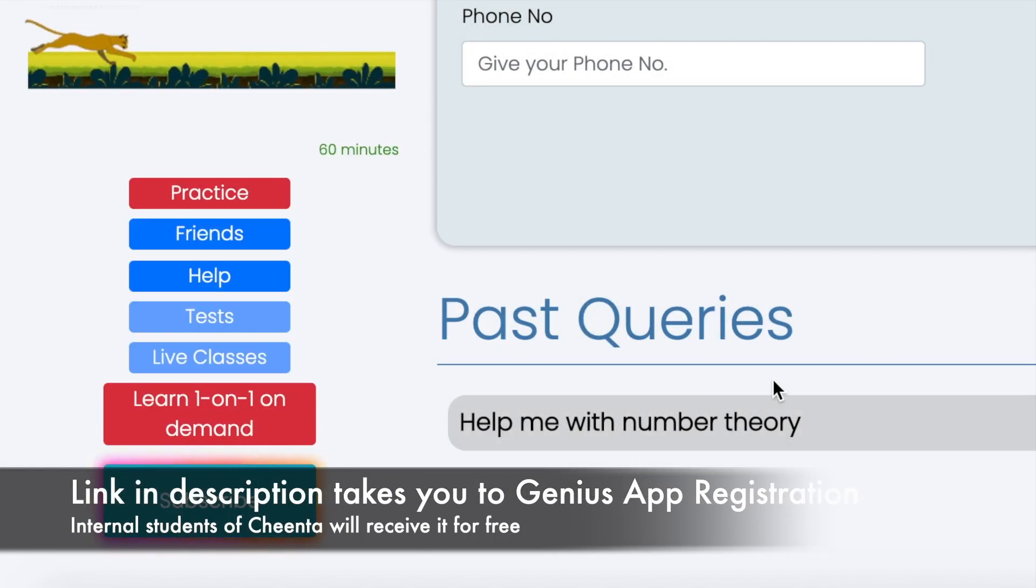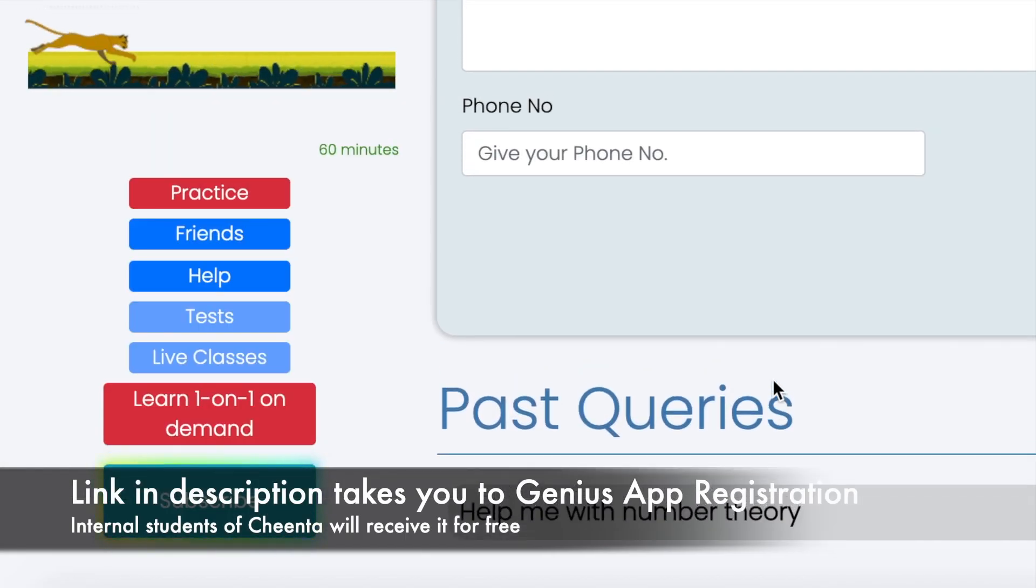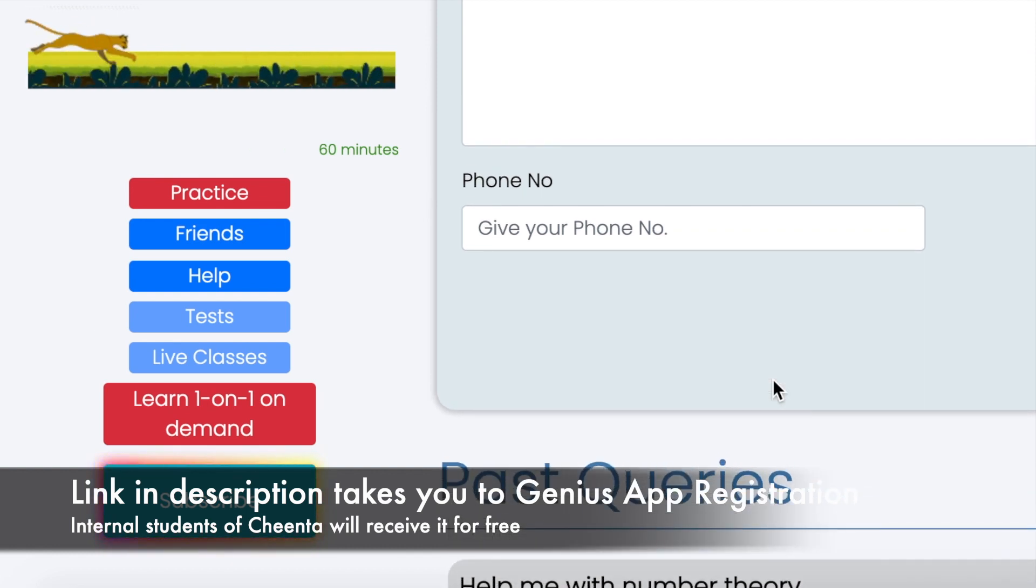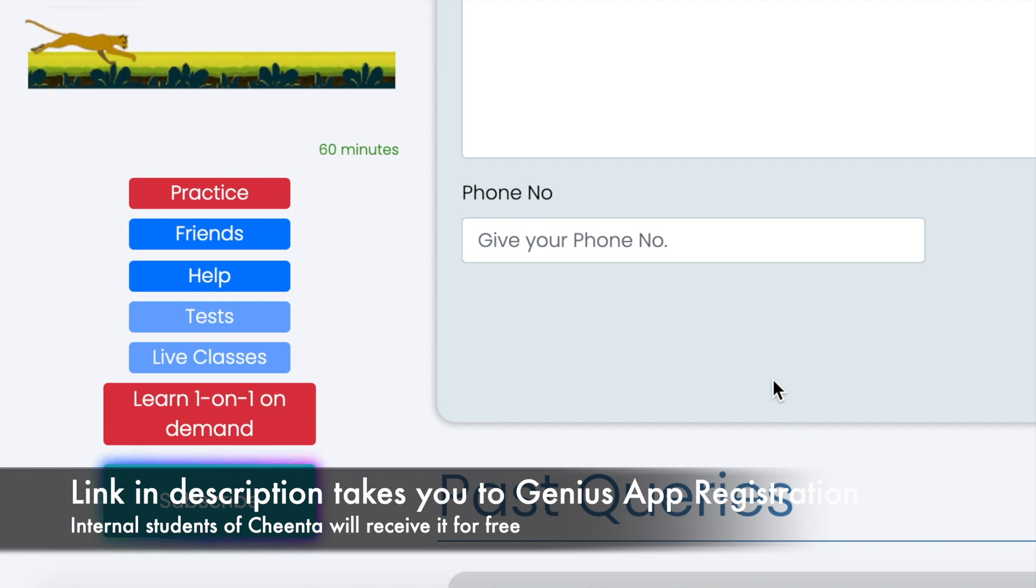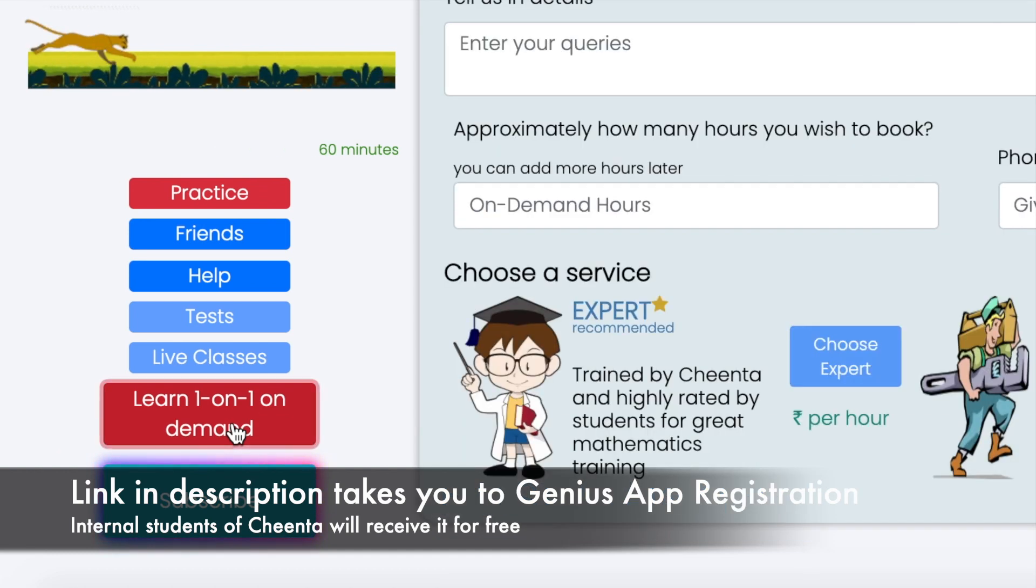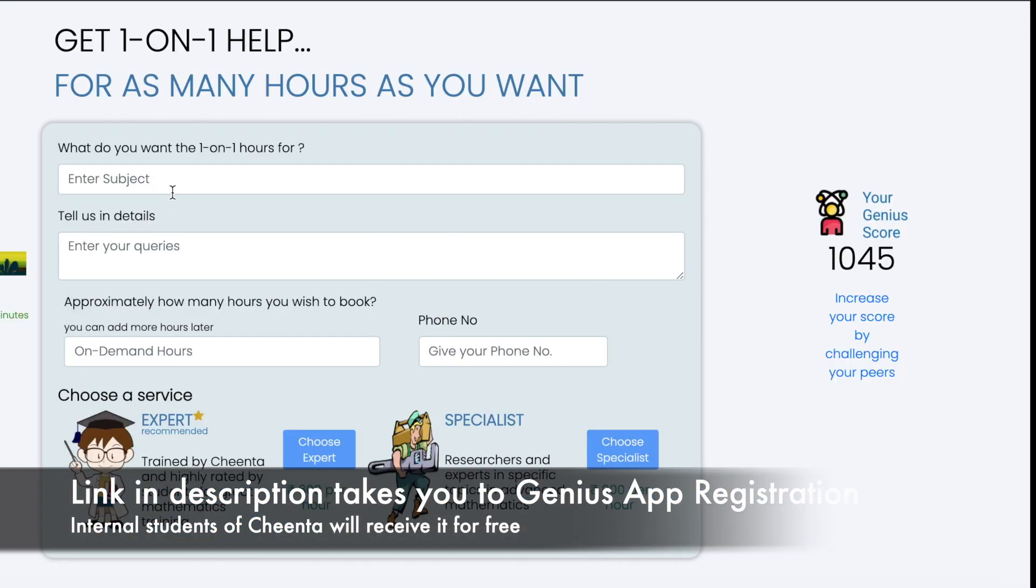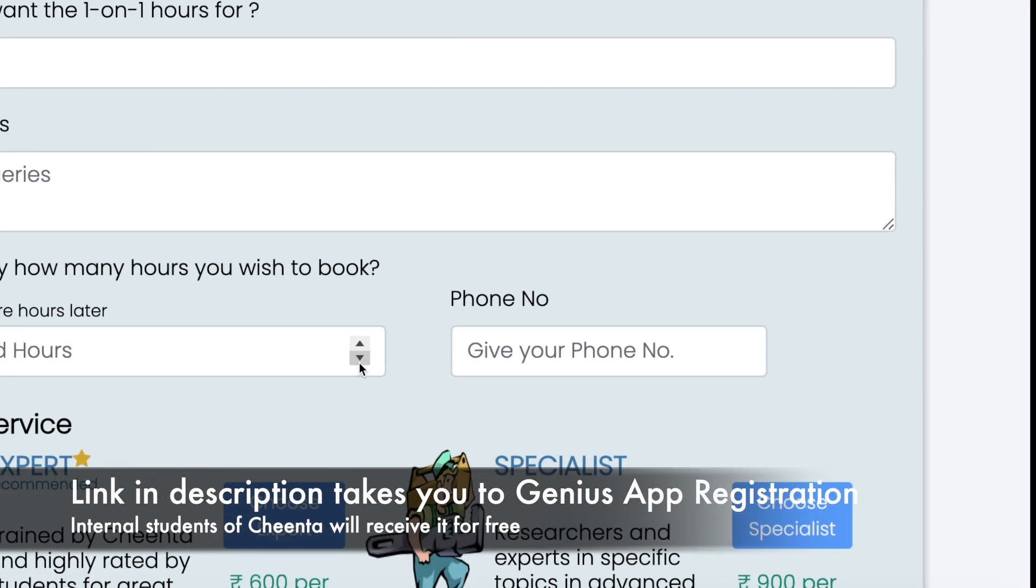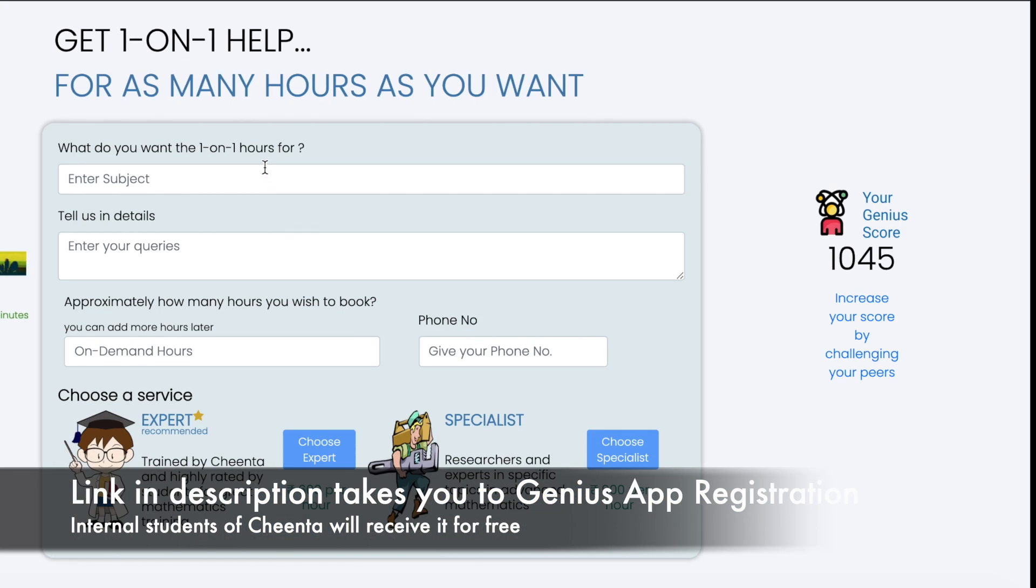Maybe you need help in a one-on-one manner, more help than you already have in the one-to-one classes and the group classes in your program. Maybe you need additional one-to-one hours. Then you can click on learn one-on-one on demand and either hire an expert or hire a specialist and join Chinta for as many one-on-one hours as you need.